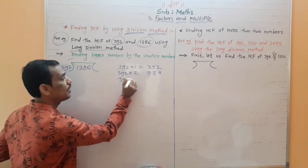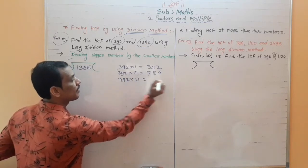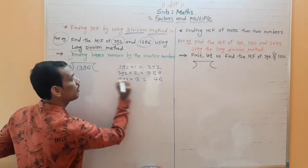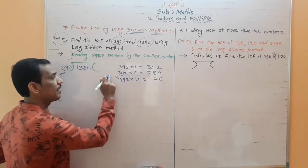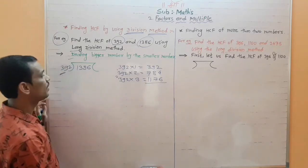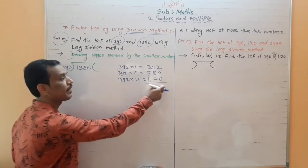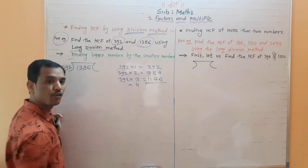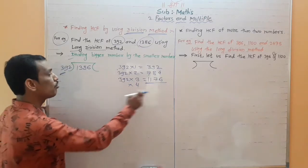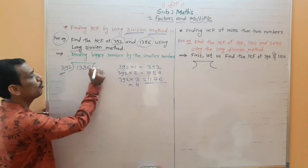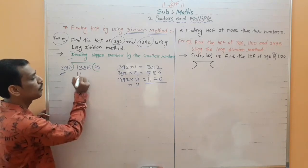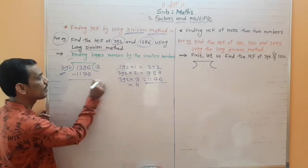Then 392 into 3: 3 sixes are 18, 9 threes are 27, 3 threes are 9 plus 1 is 10, giving 1176. If we do 392 into 4 we get a bigger number than 1386, so we choose 392 into 3 which gives 1176. Now do the subtraction: 1386 minus 1176.